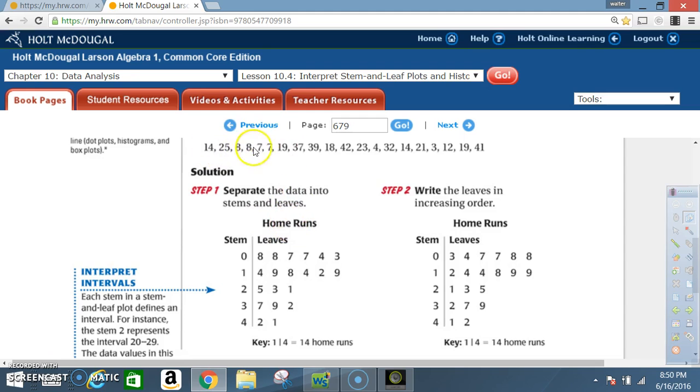Home runs. Look at your numbers. All the single digit numbers are going to be represented by a zero in front. So the zero, then you have eight and eight, seven and seven. If you go on down you have four and then you have three. The two digit numbers that are in the teens, their stem is going to be one. So one four means fourteen, one nine means nineteen, one eight means eighteen, one four means fourteen, one two means twelve, and one nine means nineteen.